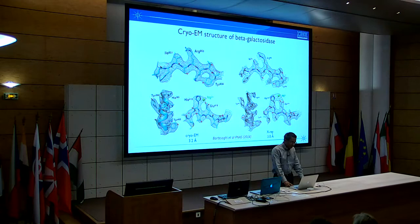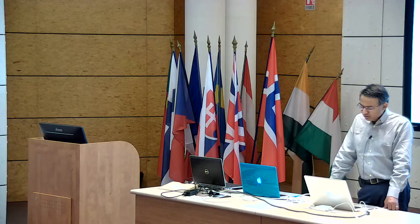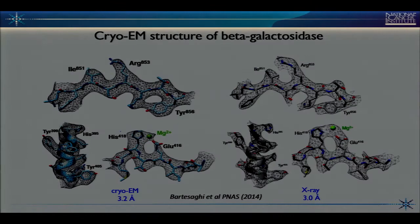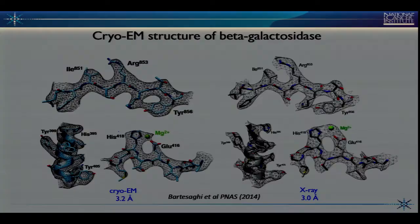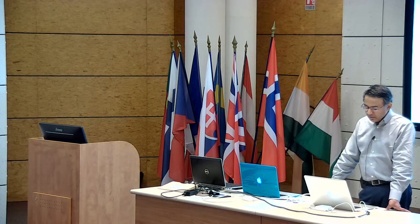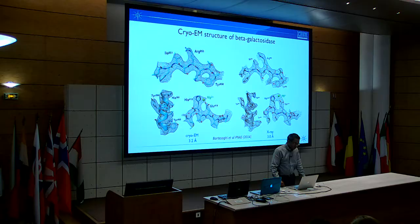In 2014, in one of our first efforts pushing towards higher resolution, we determined the structure of beta-galactosidase by cryo-EM. At a resolution of about 3.2 angstroms, it compared favorably to the work from Brian Matthews' lab two decades ago — their 3-angstrom X-ray structure was very similar to what we obtained using cryo-EM, in this case using about 11,000 particles. That was very encouraging.